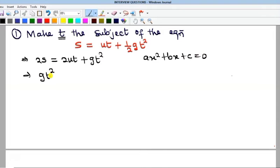So I'll have gt squared plus 2ut minus, of course, this will come over to this side. So you have minus 2s equal to 0.